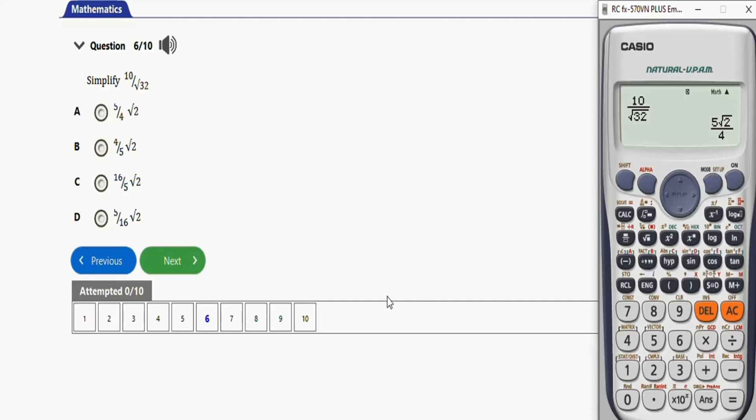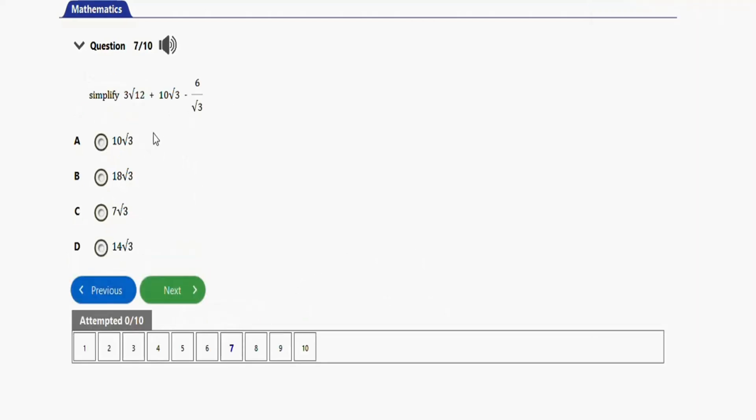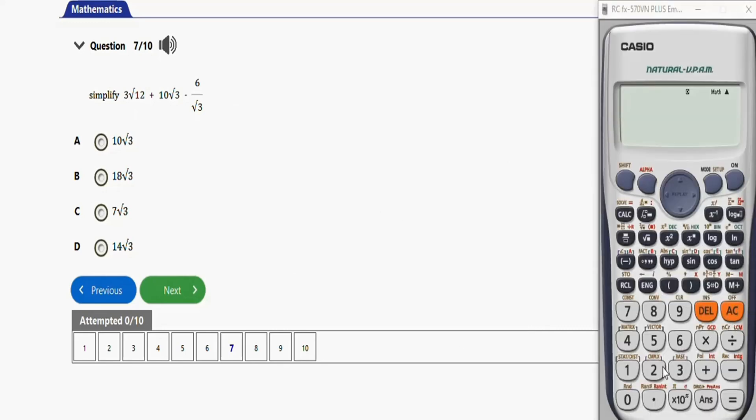Next question, it says simplify this. The calculator should be able to solve this as well. Let's bring it. We have 3√2 plus 10√3 minus in fraction 6 over √3. We have it to be 14√3. So the right option is option D.